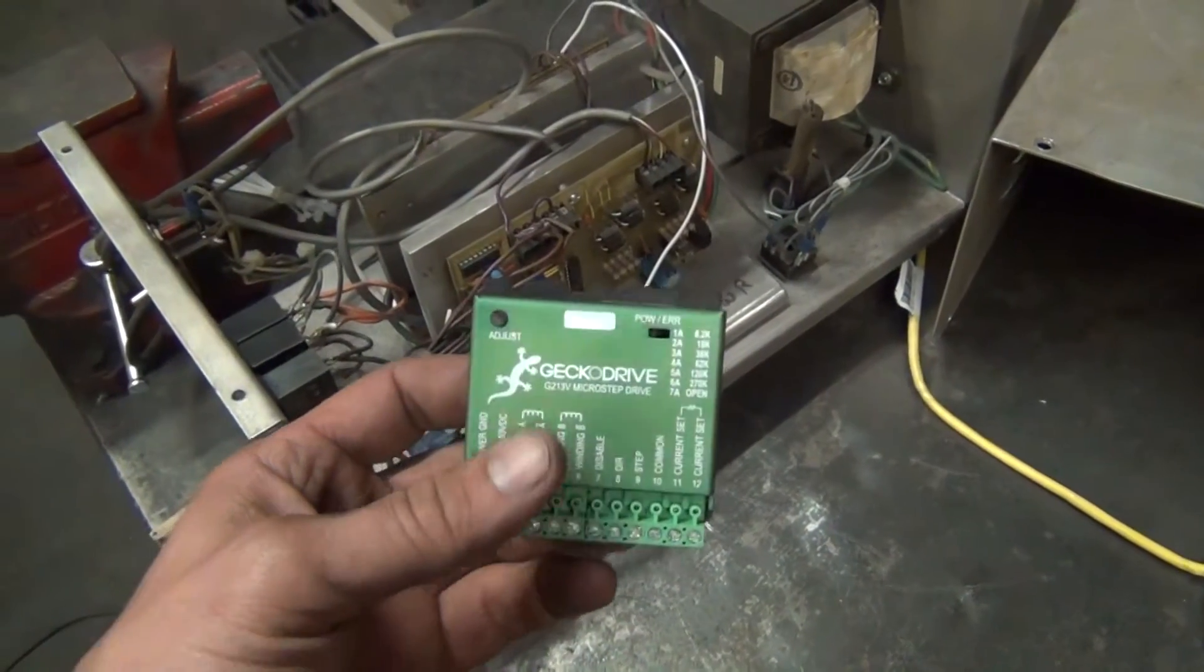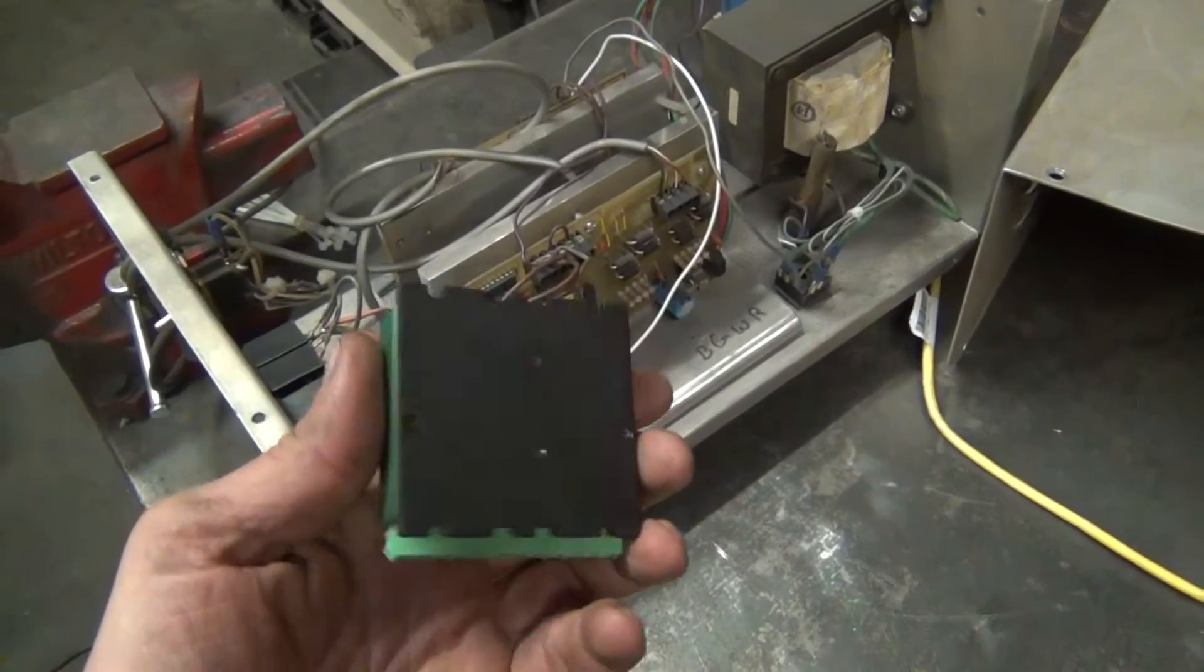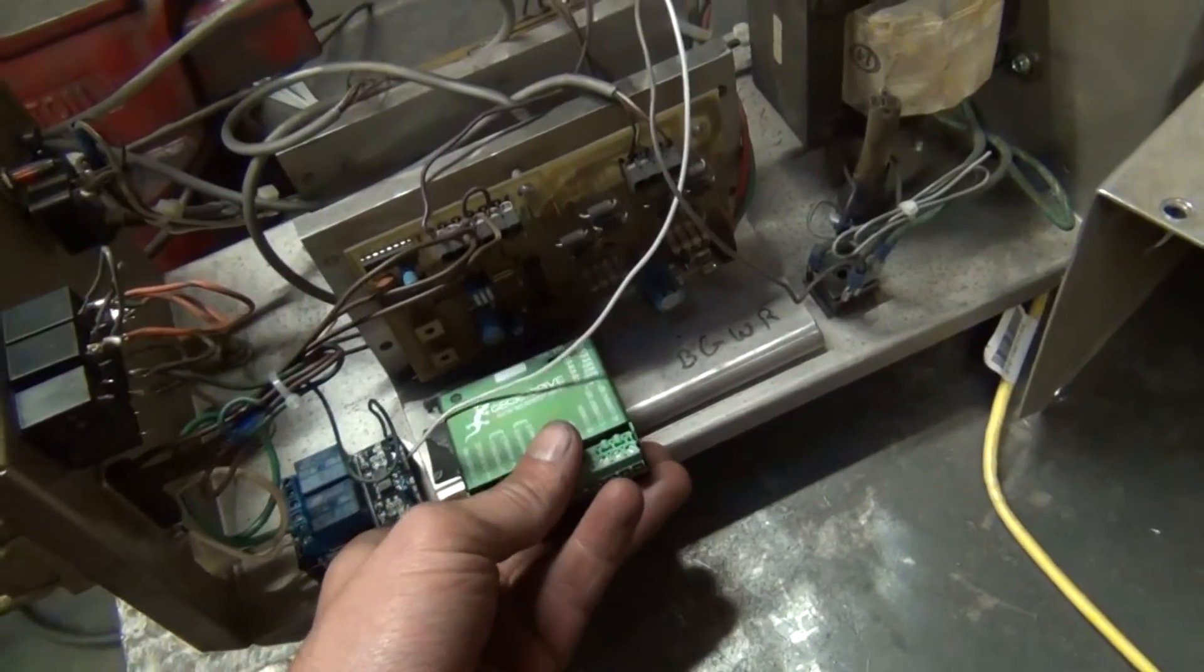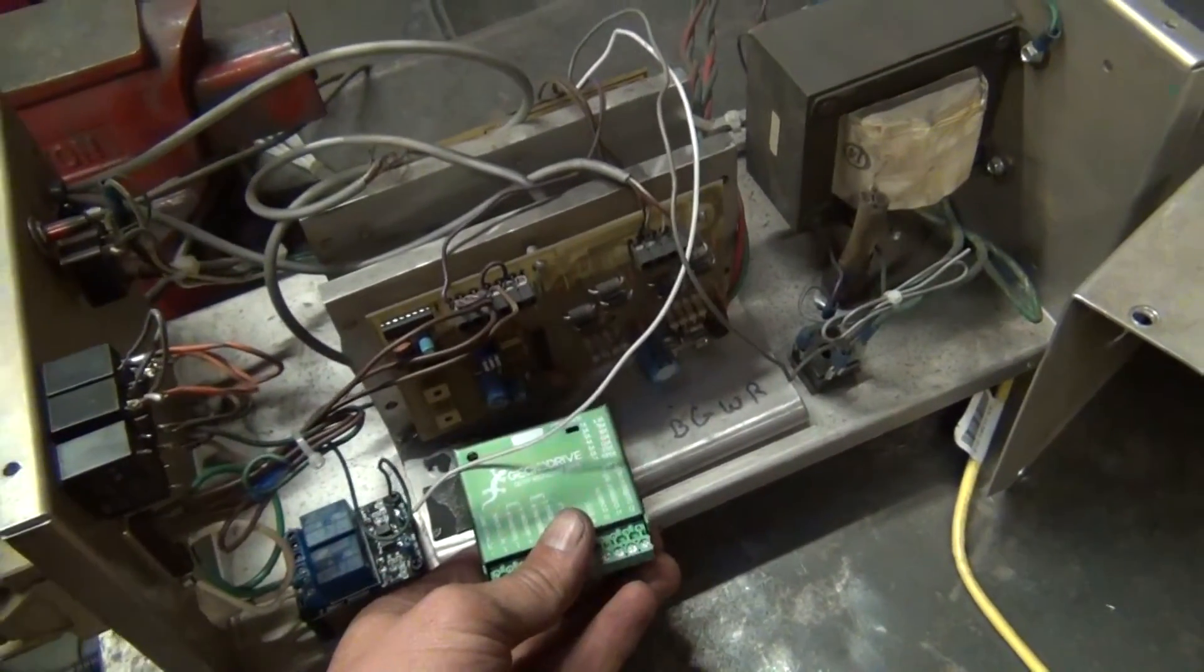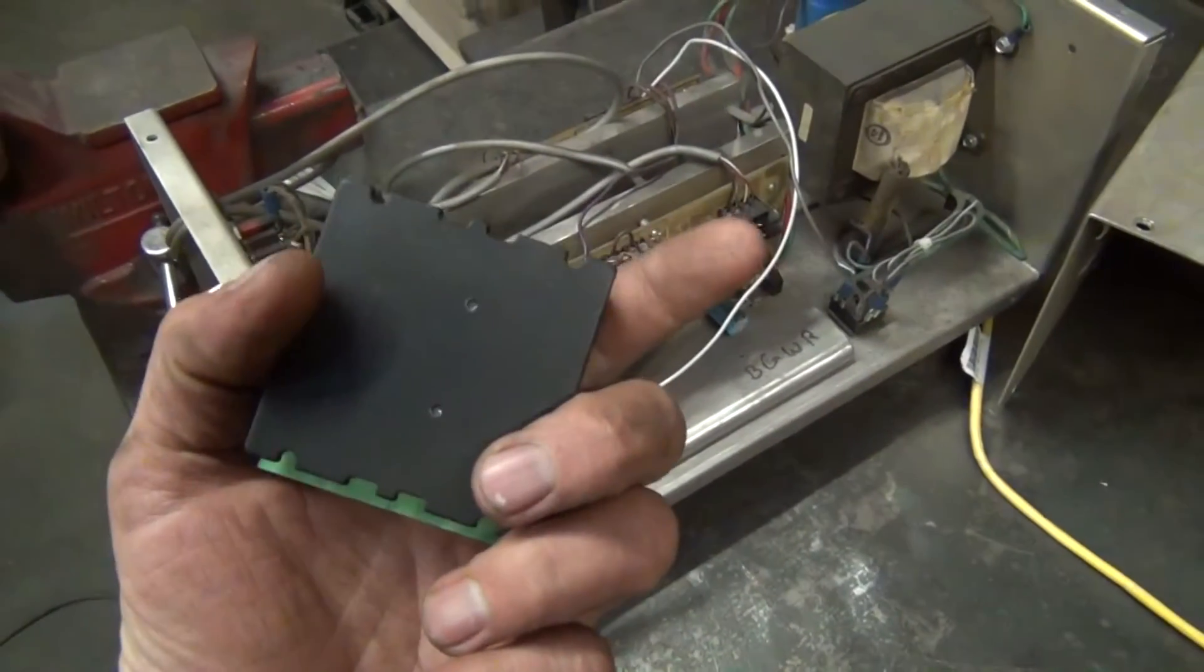I spent some time on their website and I looked at them on eBay and everything else, and I guess I was expecting something bigger. These things are really small, about a quarter of the size of the boards that I have in there right now. But that's okay, they pack a lot into a small package.